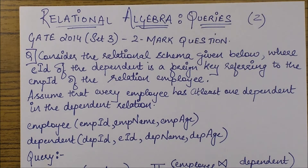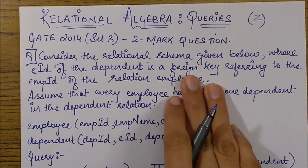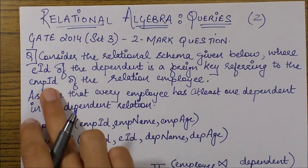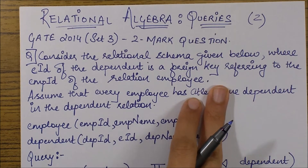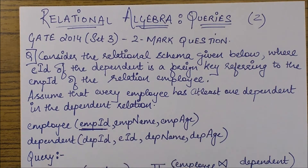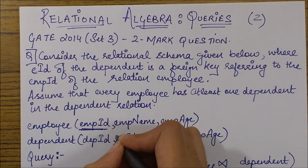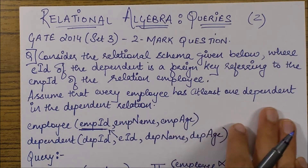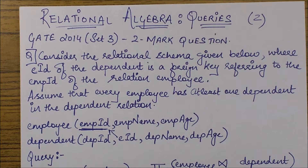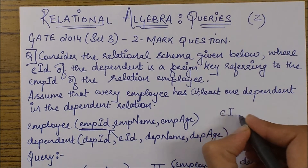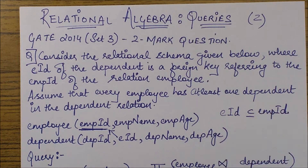The question asks us to consider a relational schema with two tables: Employee and Dependent. The EID of the Dependent table is a foreign key referring to the EMPID of the Employee table, which means EMPID is a primary key — so I am underlining it. Since EID is a foreign key, EID is a subset of EMPID, because the foreign key of one table is always a subset of the primary key of the table it refers to.